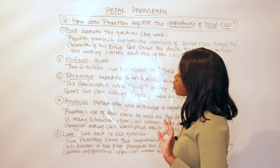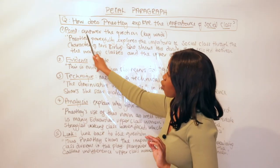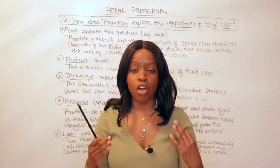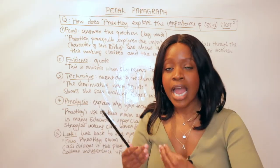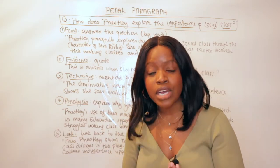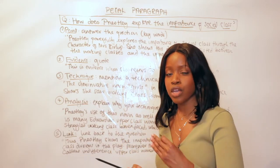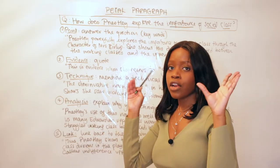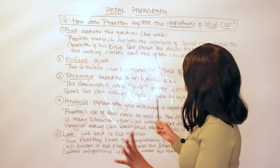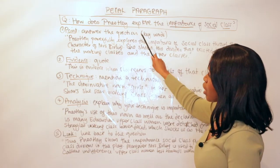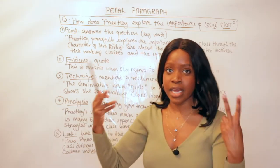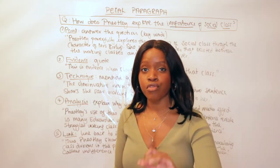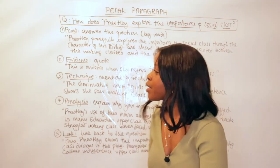The P in PETAL — Point — simply means: answer the question. Just address the question and answer it, using keywords from the question itself. Using those keywords shows the examiner or your teacher that you are directly answering what was asked. So with this example, you're being asked how Priestley, as a playwright, shows the importance of social class.